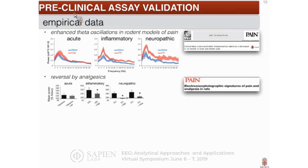In the next set of studies, we treated those animals with compounds known to block pain in human subjects, depending on the type of pain. For example, we administered ibuprofen for the acute model, pregabalin for the inflammatory model, and mexiletine for the neuropathic model. In all of these conditions, EEG in the low frequency range was reversed after being increased in the pain model — with the exception of ibuprofen, for technical details I can address at the end.